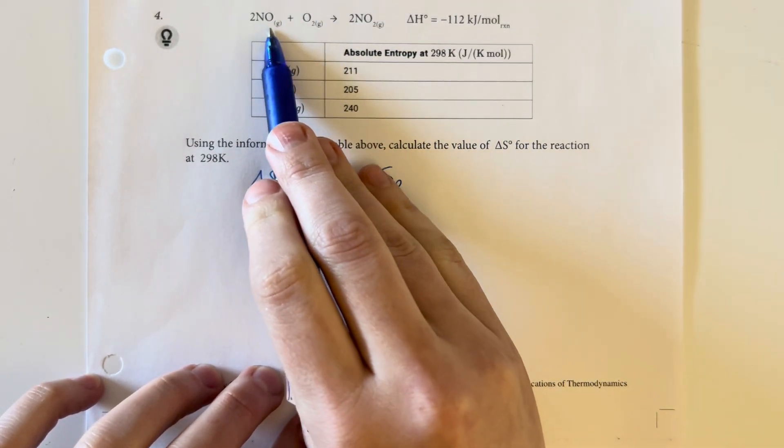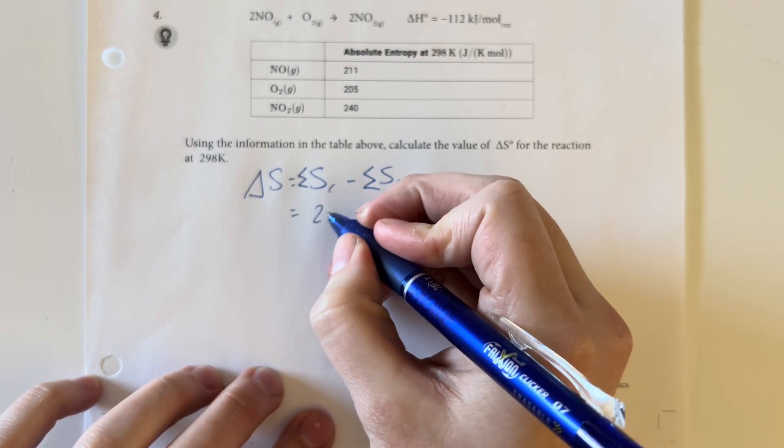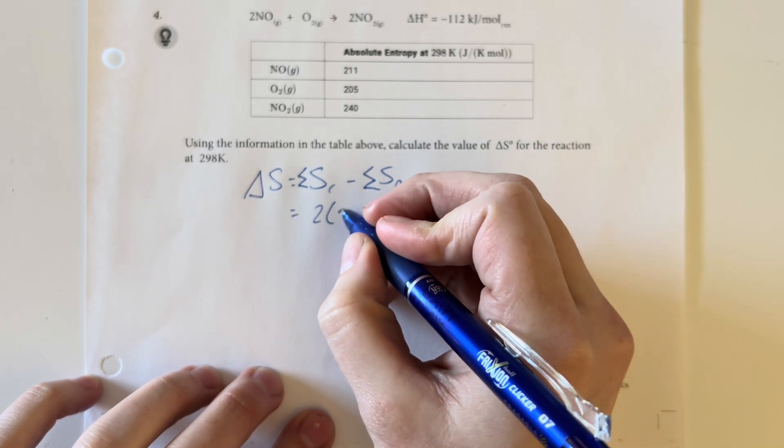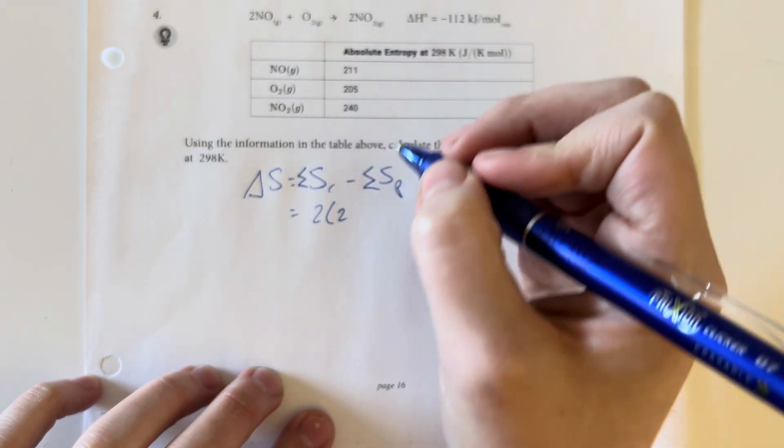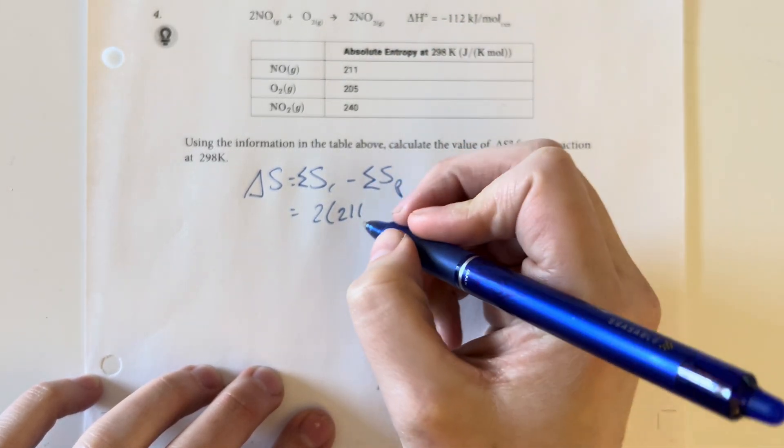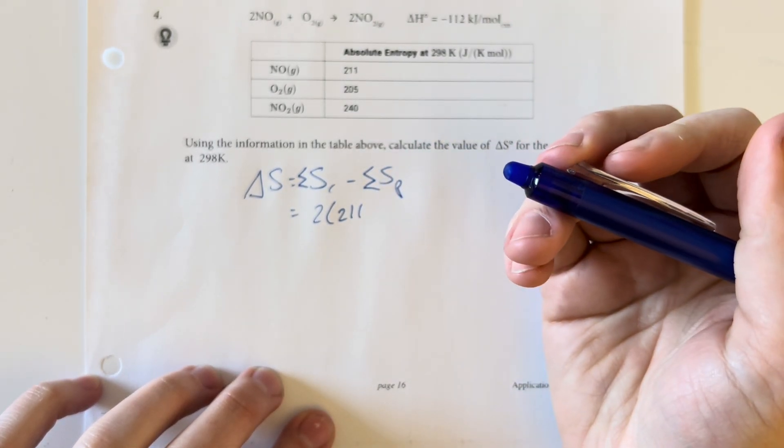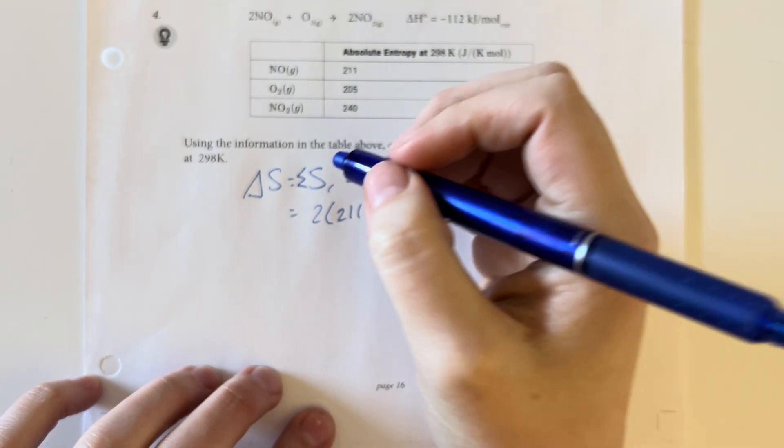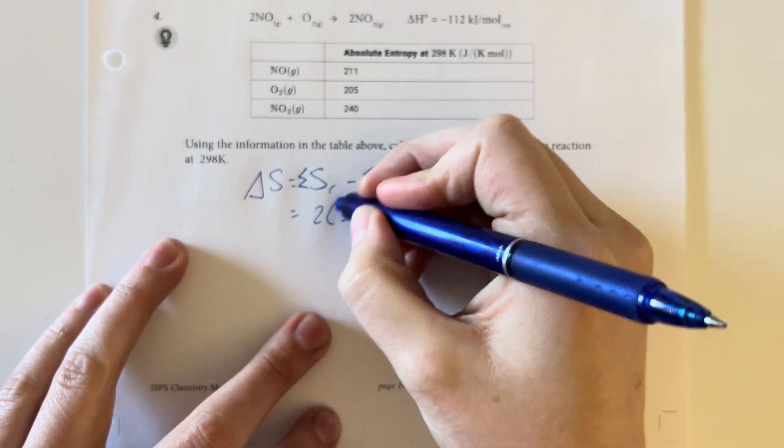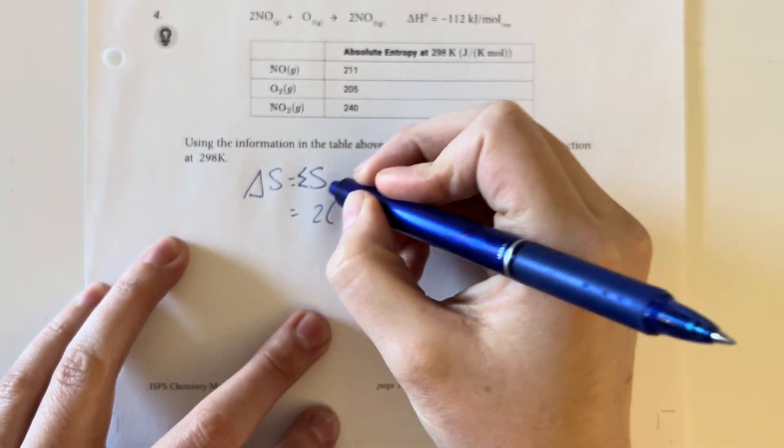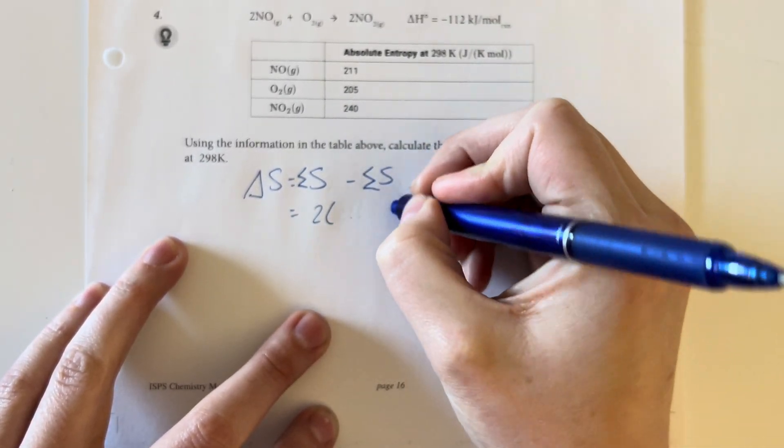Our reactants are the nitrogen monoxide, I have two of them, so 2 times 211. Oh, my apologies. I don't know why I accidentally did that. It is products minus reactants, not reactants minus products. I apologize.